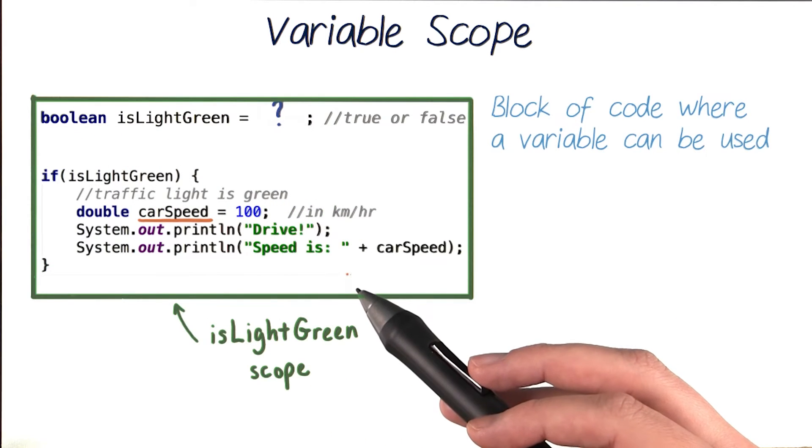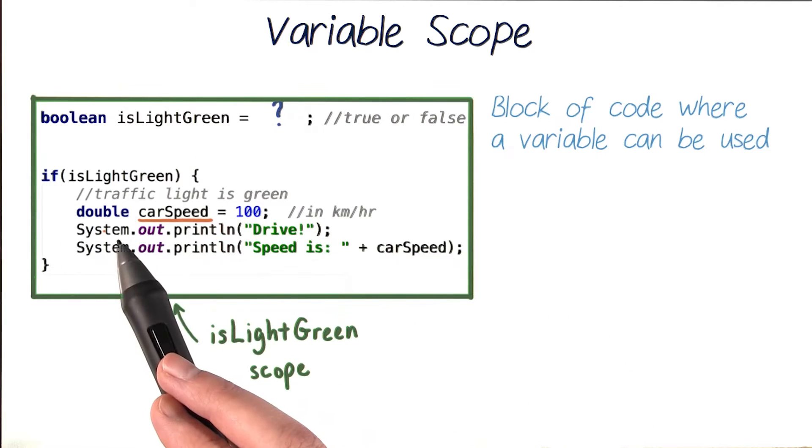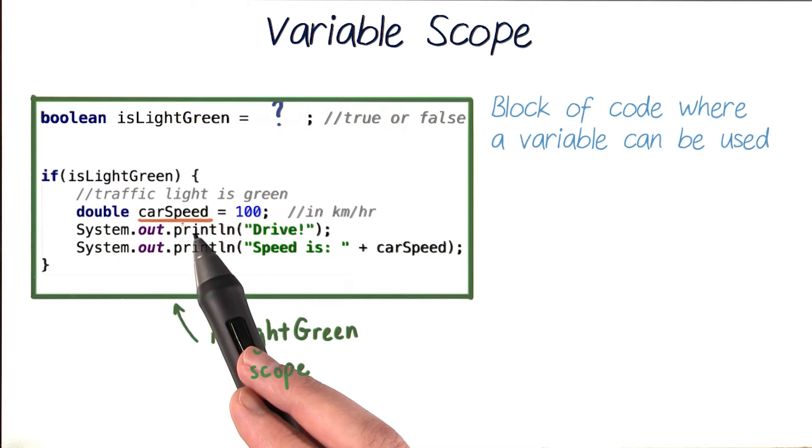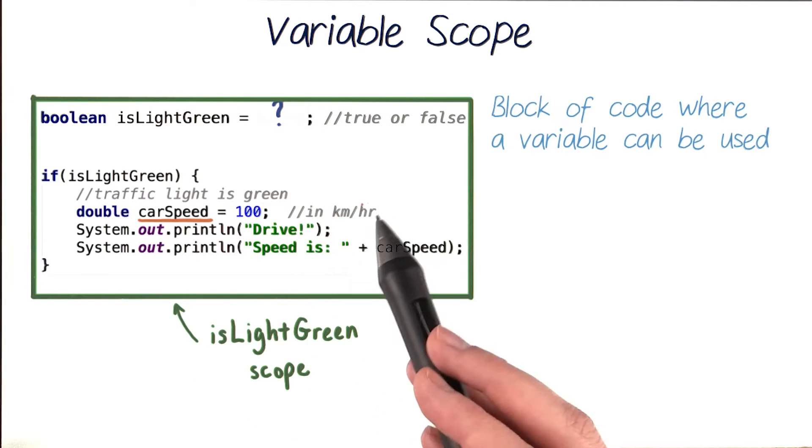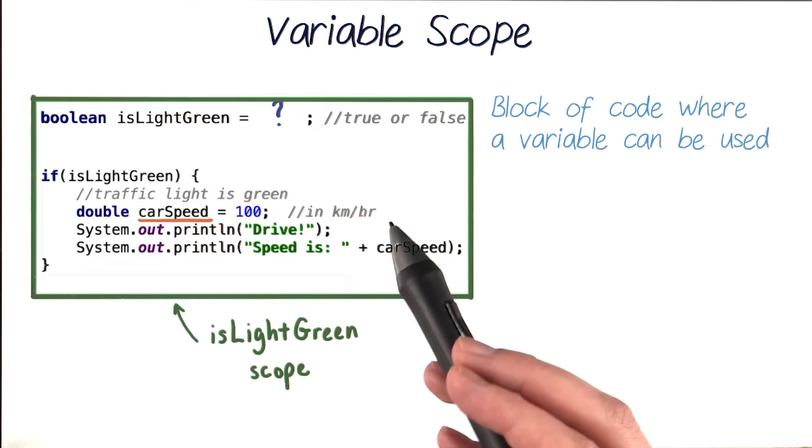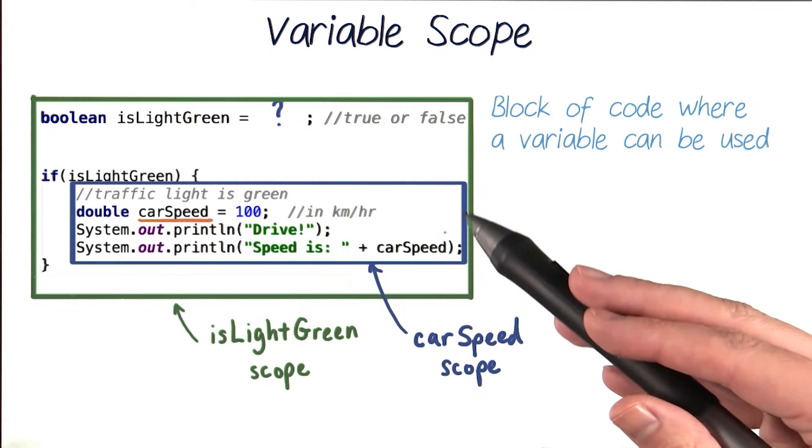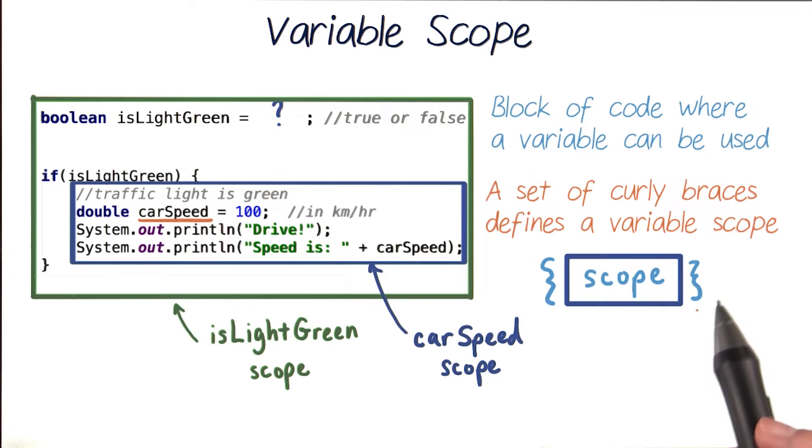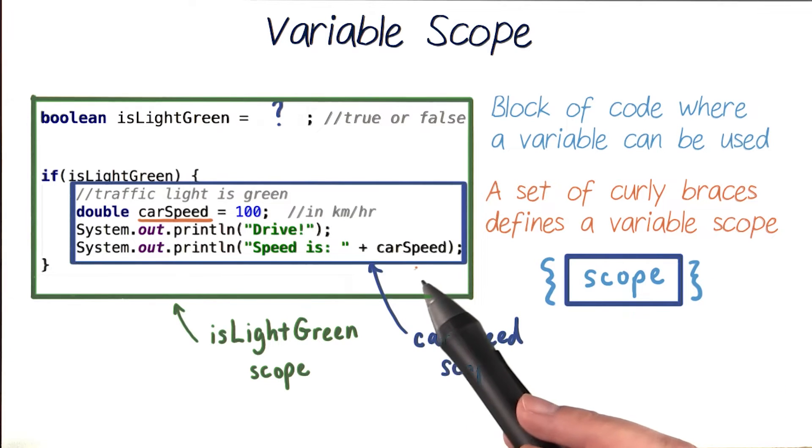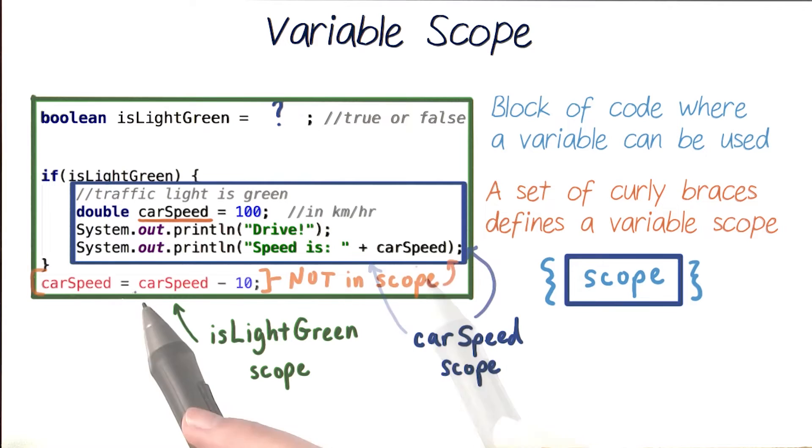But what if we instead declare a variable inside our if statement, inside its curly braces? In fact, a set of curly braces defines a particular variable scope. Inside this scope, we can use the variable CarSpeed, and we are by printing it out. But if we try to refer to that variable outside of these curly braces, we can't.